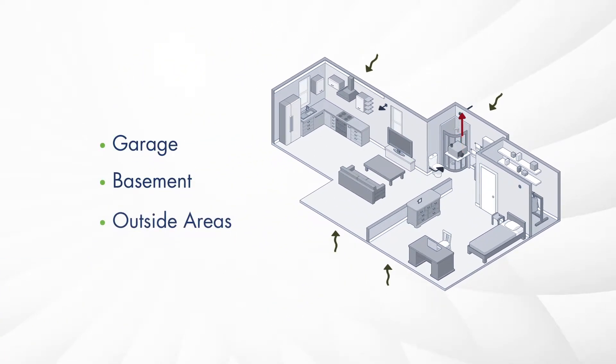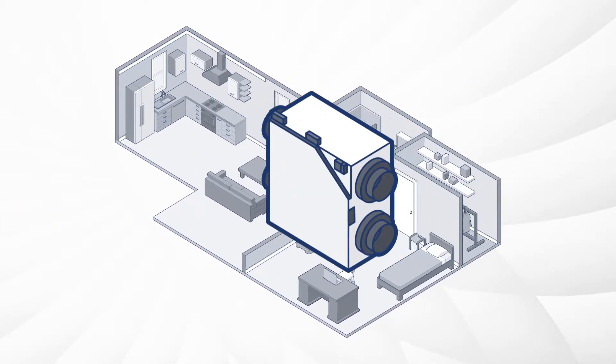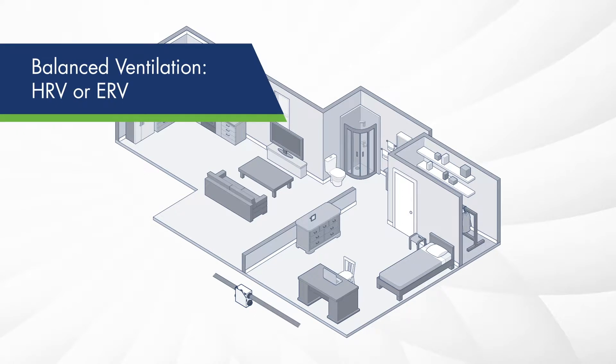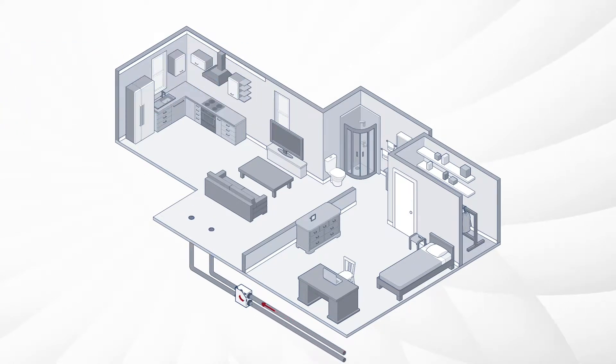basement, or outside areas, leading to poor indoor air quality. Balanced ventilation such as HRV or ERV uses an internal fan to supply fresh air into the home while simultaneously exhausting an equal amount of stale air.